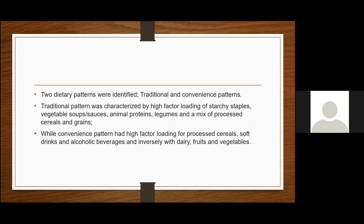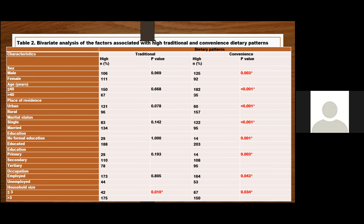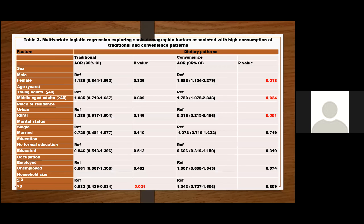After assigning the patterns, we used bivariate analysis to relate them to social demographics. We found a relationship between the traditional dietary pattern and household size. We also found associations between the convenience pattern and sex, age, place of residence, marital status, education, income, and household size.